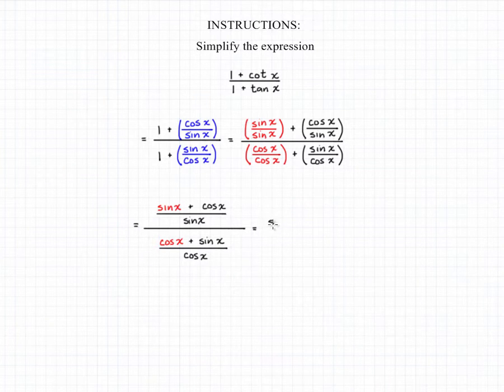From here, all we need to do is remember that dividing is the same as multiplying by the reciprocal. So we can rewrite this as sine of x plus cosine of x over sine of x, times the reciprocal of the part of the expression we were dividing by, so cosine of x over cosine of x plus sine of x.